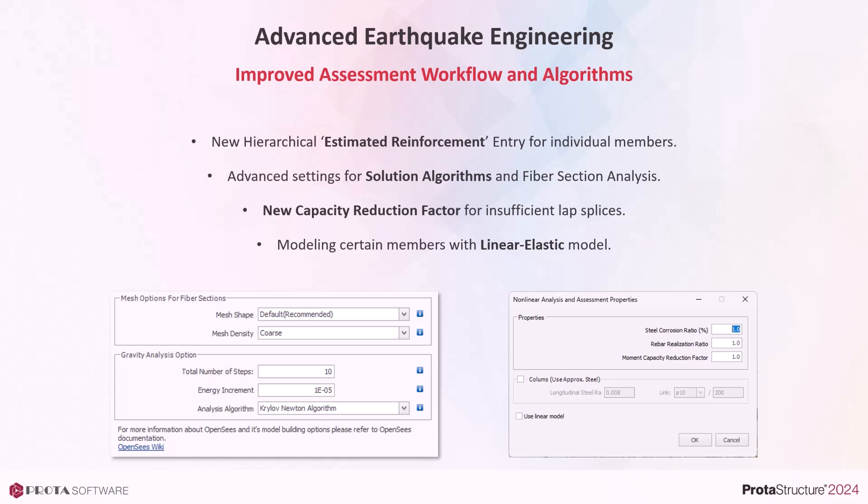In Protostructure 2024, we have introduced innovations and significant improvements to the building assessment workflow. This will make your assessment and retrofit work much easier and more efficient. You can now define the estimated or exact reinforcements inside the individual members in a hierarchical manner. We have improved solution algorithms in fiber section analysis and introduced new settings that will allow you to have more control over your project.